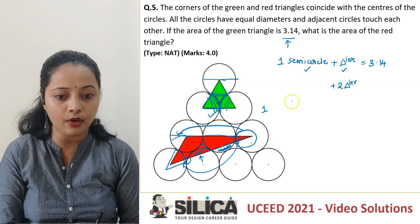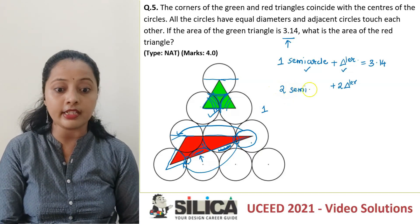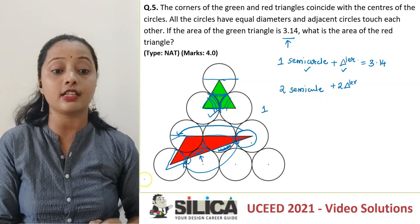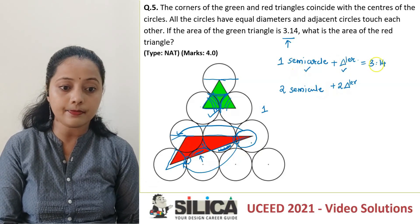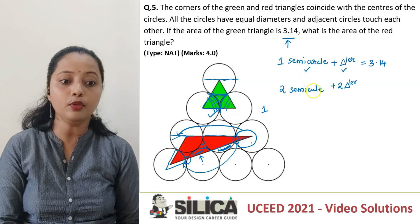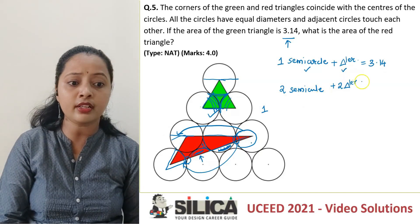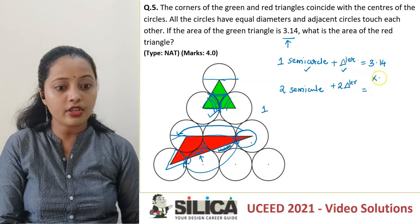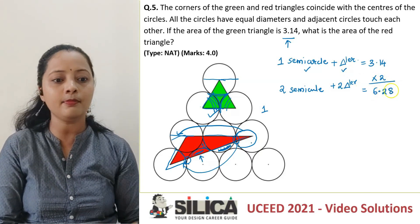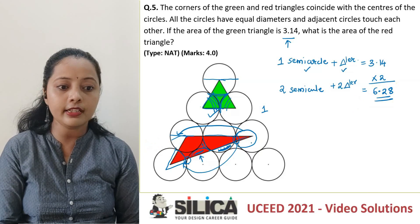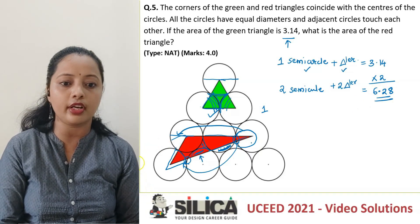That will form the second semicircle. So basically the entire red structure is getting transformed into two semicircles plus two triangular structures. We know one semicircle and one triangular structure equals 3.14. So since both numbers are doubled, the area should obviously be doubled. The answer is 3.14 × 2 = 6.28.